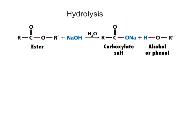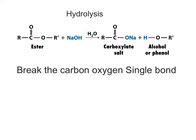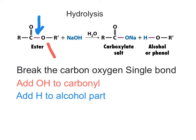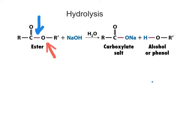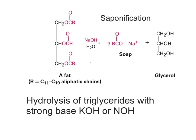We have seen hydrolysis of esters in the organic chemistry part. We're going to do a little review in basic conditions. First, we are adding a molecule of water to the carbonyl and we are breaking the carbon-oxygen single bond. We add the OH to the carbonyl and the hydrogen to the alcohol part. The initial product, carboxylic acid, will continue reacting with the base sodium hydroxide to produce a free alcohol and a carboxylate salt. The same reaction, hydrolysis under basic conditions, can also take place with triglycerides.